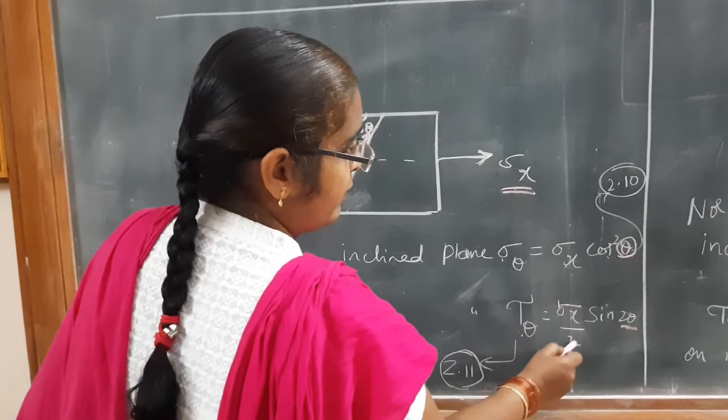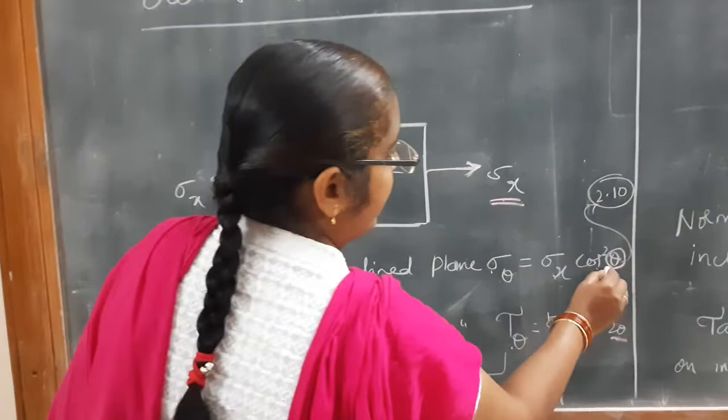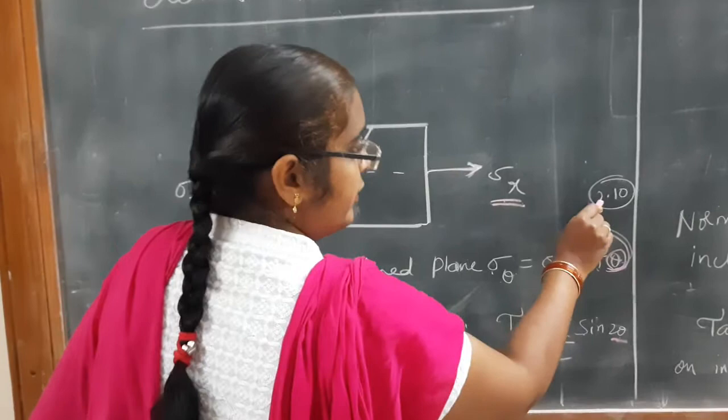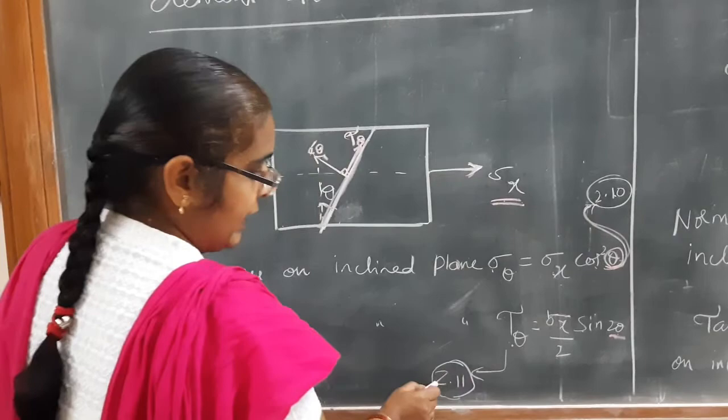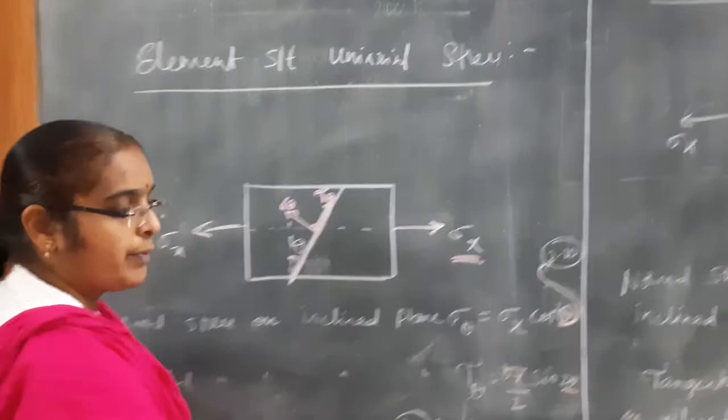These equations are already available in your data handbook. The equation number is 2.10 — second chapter, tenth equation. And the tangential stress formula is equation 2.11 — second chapter, eleventh equation. These equations are readily available in your data handbook.